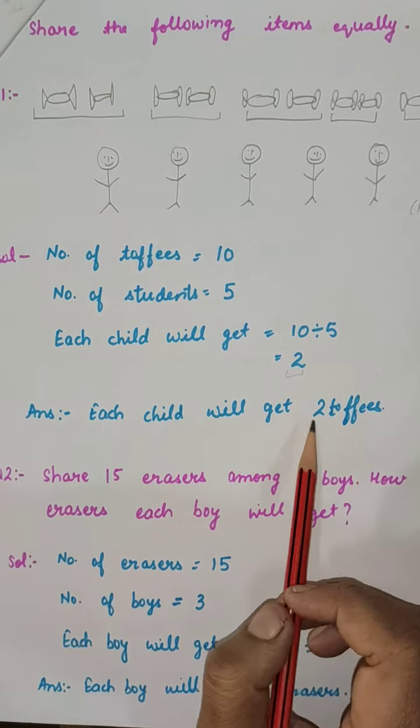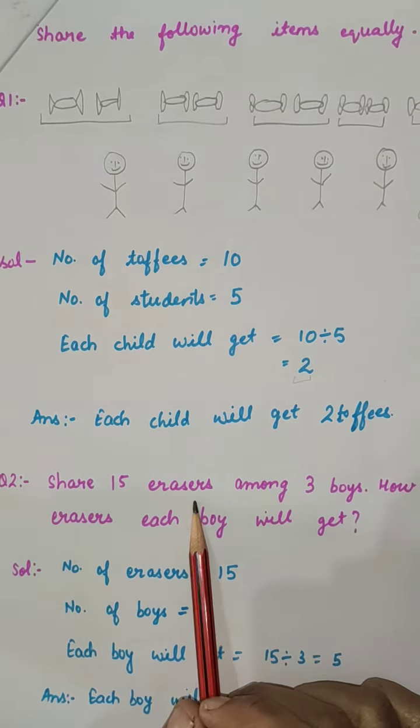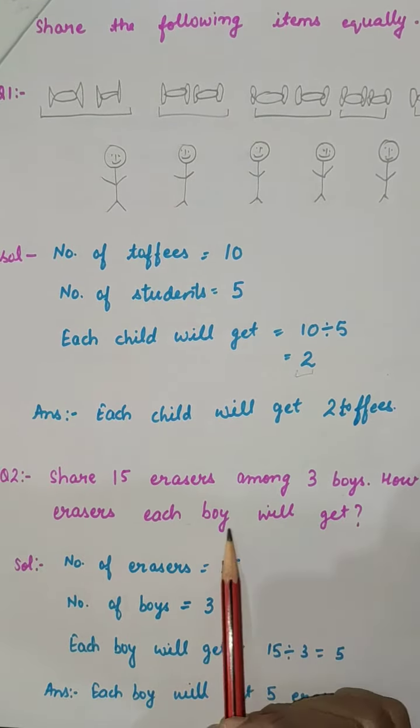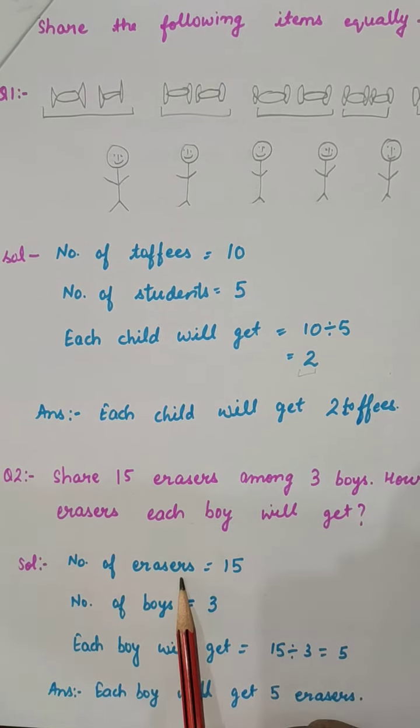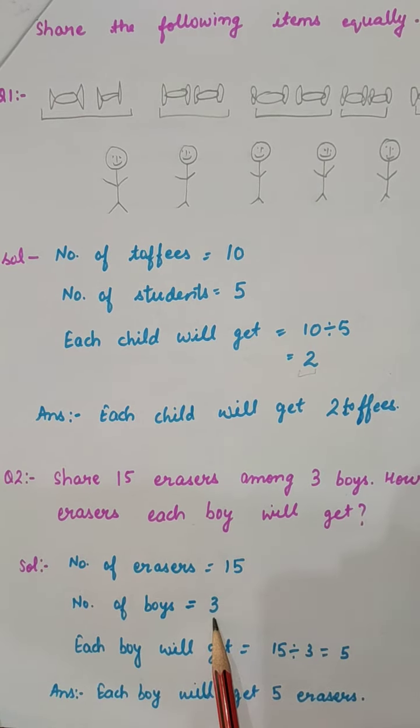Each child will get two toffees. Now, share fifteen erasers among three boys. How many erasers will each boy get? Number of erasers is fifteen, number of boys is three. Now you will divide it.